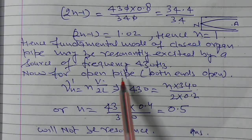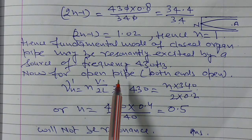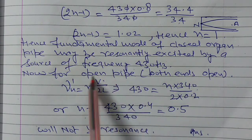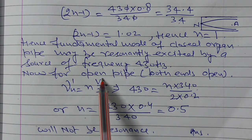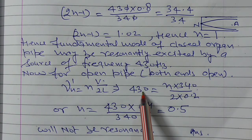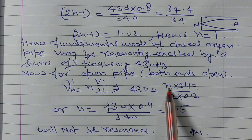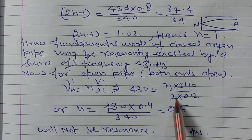Now for open organ pipe, nth normal mode is equal to n into v upon 2L. νn is given as 430. We need to calculate the nth normal mode of vibration. v is given 340 upon 2 into length 0.2.